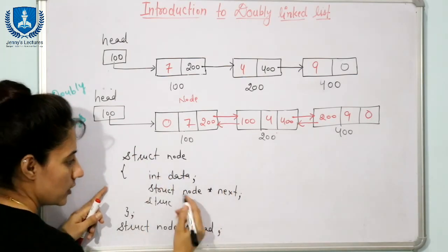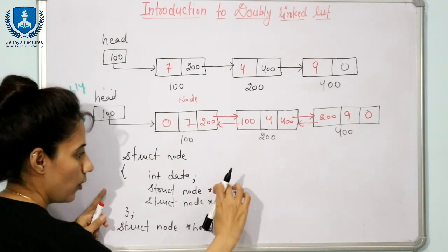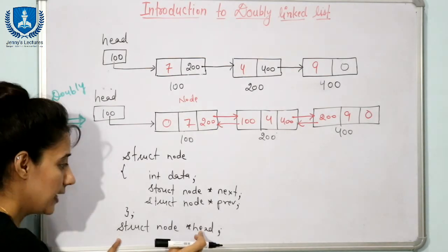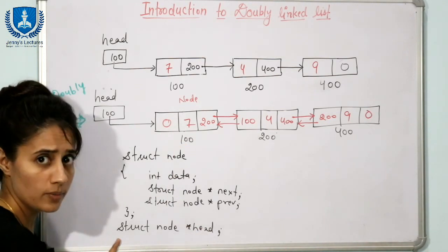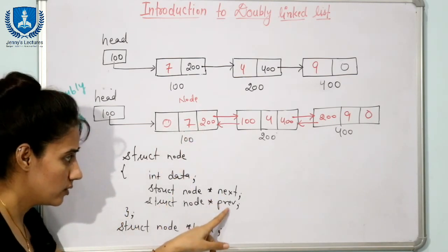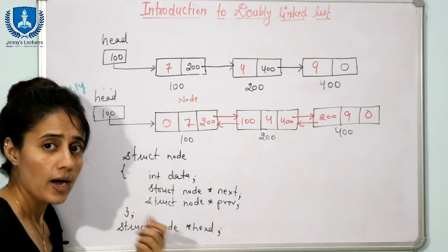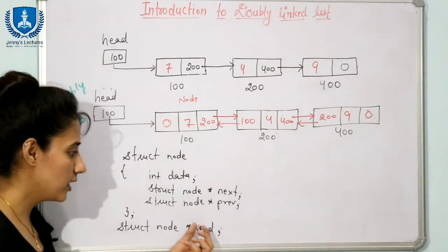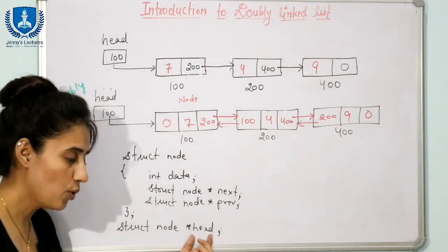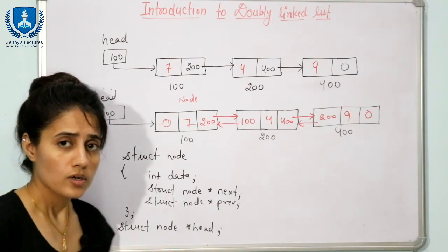So the struct node for a doubly linked list has three parts: int data, struct node pointer next, and struct node pointer pre. We also declare a head pointer containing the address of the first node. We need this head pointer because to access the fields — data, next, and previous — we need either a struct variable or a pointer. Since we use dynamic memory allocation, we use a pointer to access dynamically allocated memory.